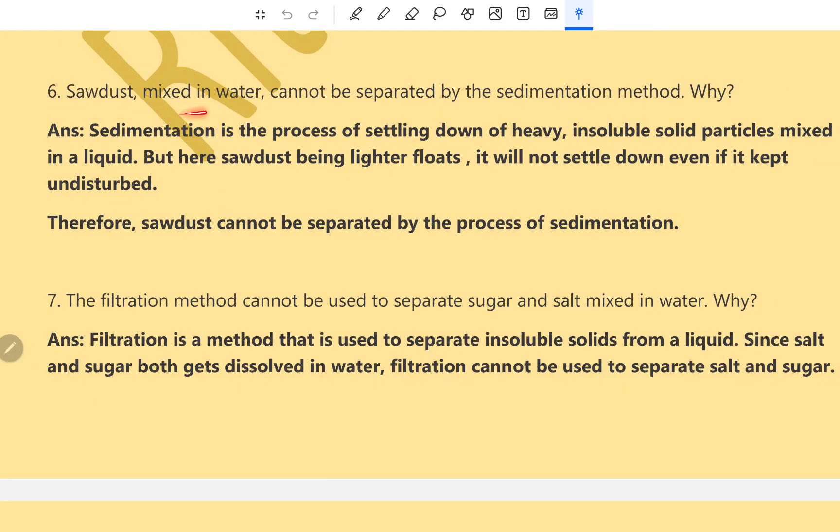Question number 6. Sawdust mixed in water cannot be separated by the sedimentation method. Why? Sedimentation is the process of settling down of heavy insoluble particles, insoluble solid particles mixed in a liquid. But here sawdust being lighter fluids, it will not settle down even if it kept undisturbed for a long period of time. Therefore, sawdust cannot be separated by the process of sedimentation.